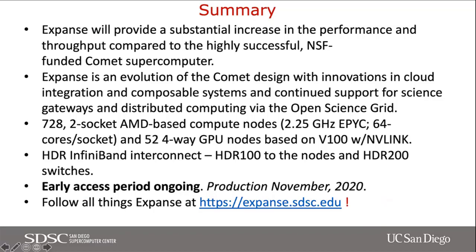To summarize, Expanse will provide a huge increase in performance and throughput compared to Comet. It's essentially an evolution of the Comet design with innovations in cloud integration and composable systems. We have 728 compute nodes and 52 GPU nodes with HDR100 interconnect, integration with Open Science Grid, and the system goes to production in a couple of weeks. You can follow all things Expanse at the provided website.